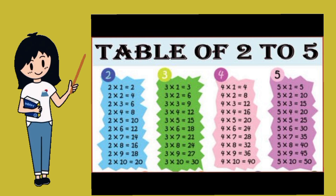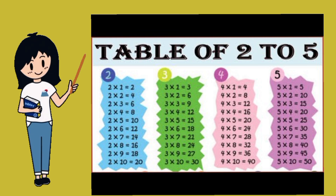Two ones are two. Two twos are four. Two threes are six. Two fours are eight. Two fives are ten. Two sixes are twelve. Two sevens are fourteen. Two eights are sixteen. Two nines are eighteen. Two tens are twenty.